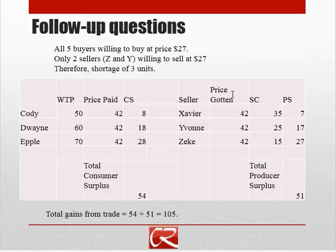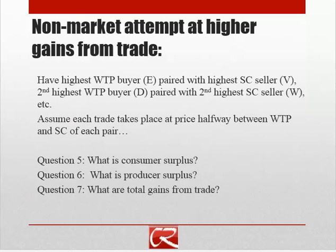For sellers, we take the price and subtract the seller cost — it's common for people to switch those around. We go ahead and figure out their producer surplus from the transaction, add them all up, and get $51 of producer surplus. Overall gains from trade are $54 plus $51, equaling $105. So let's see if we can do better than that $105 of total gains from trade.